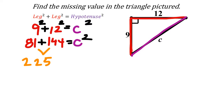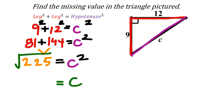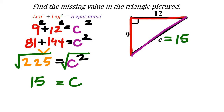225 equals C². We don't want C² — we just want C. So we take the square root of both sides. The square root of 225: I'll go to the calculator, and the square root of 225 is 15. So this length is 15. A 9-12-15 right triangle. If these were labeled in inches or feet, make sure you label your answer too, since this is technically a word problem.